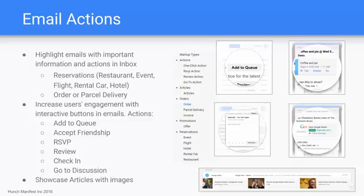The final one is that Google is also going to showcase articles with images. You can see the examples with Barack Obama — highlighting articles directly in your email and making them more appealing for the user. So that's the overview of the Knowledge Graph as well as email actions from Google.